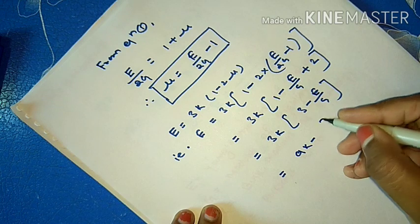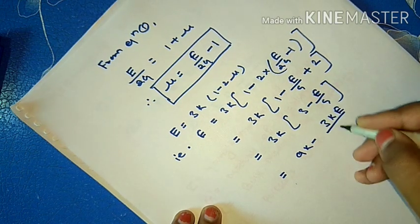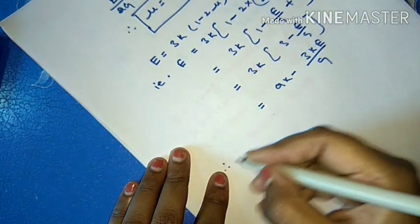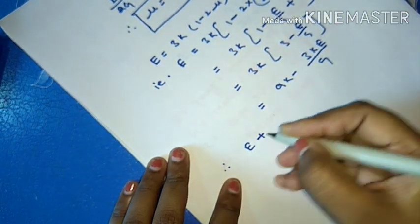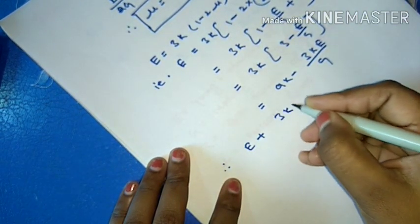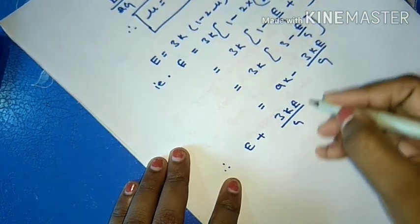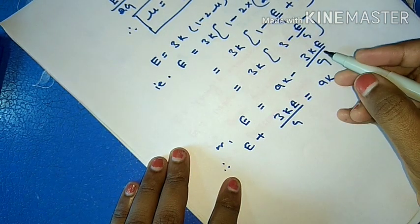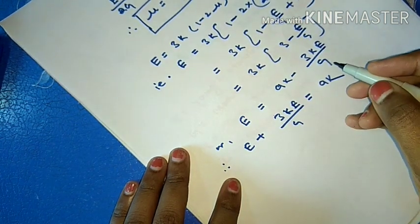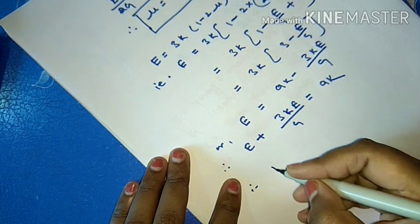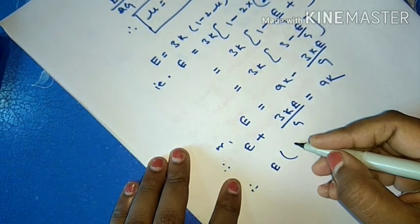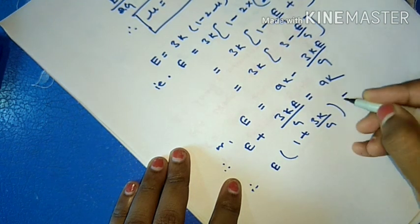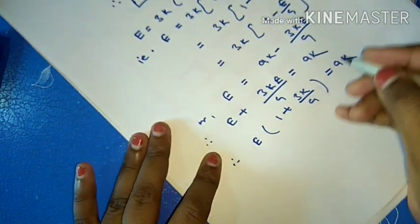After expanding, we get 9K minus 3KE divided by G. So from here we can write that E plus 3KE divided by G equal to 9K. Taking E as common factor on the left side: E times (1 plus 3K divided by G) equal to 9K.